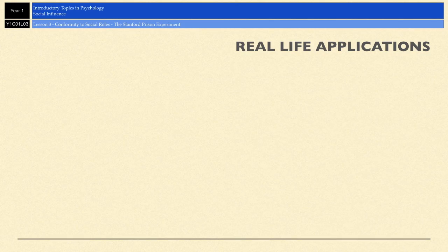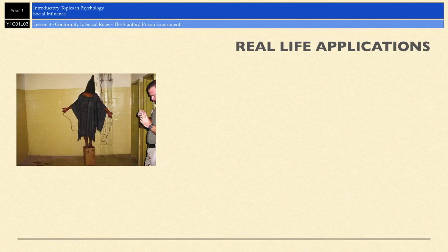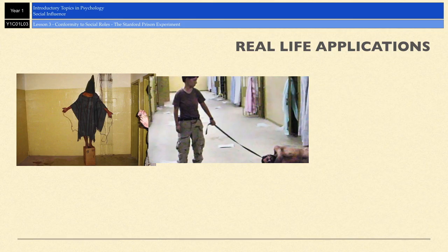There are also very good real-life applications of Zimbardo's study. The results from the Stanford prison study have been used to explain real-world atrocities committed in prisons. For example, in 2003 and 2004, US soldiers tortured and abused Iraqi prisoners in a prison called Abu Ghraib. Zimbardo believed the guards who committed the abuses were victims of situational factors — such as a lack of training, boredom, and no accountability to a higher authority — all of which were present at Abu Ghraib as well.